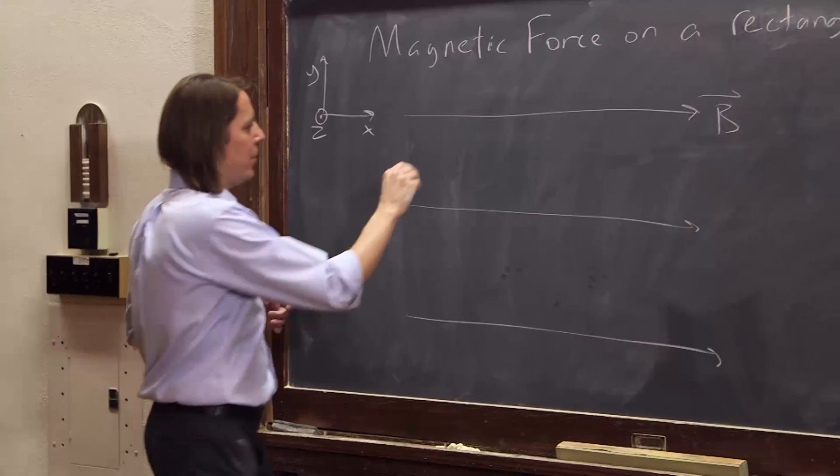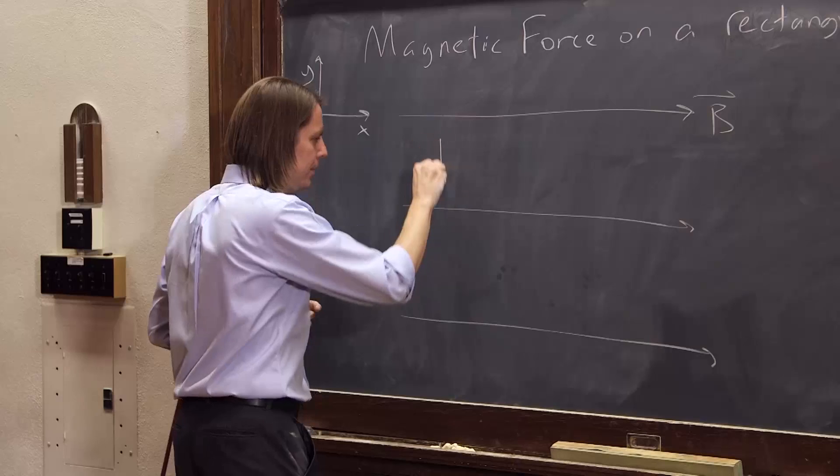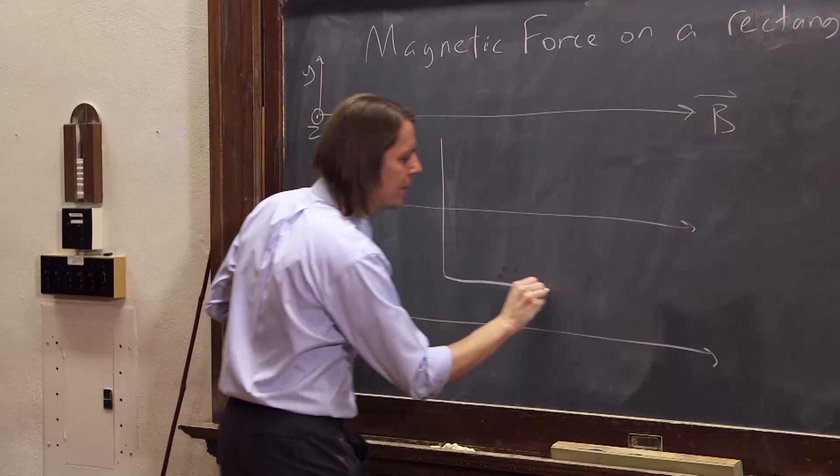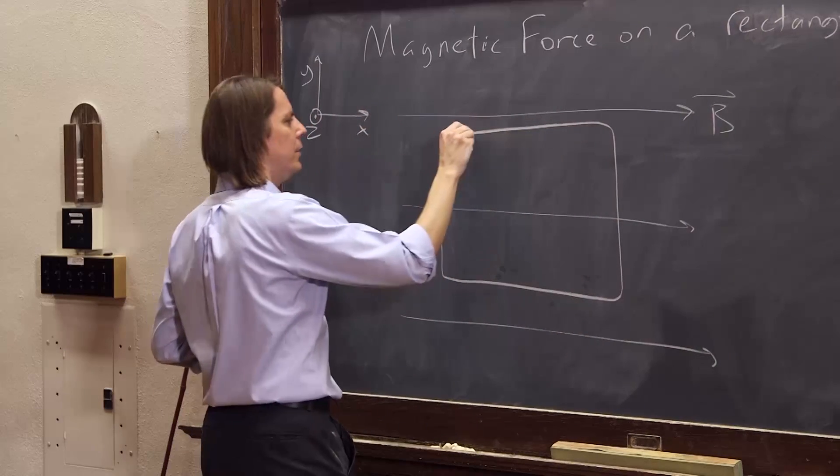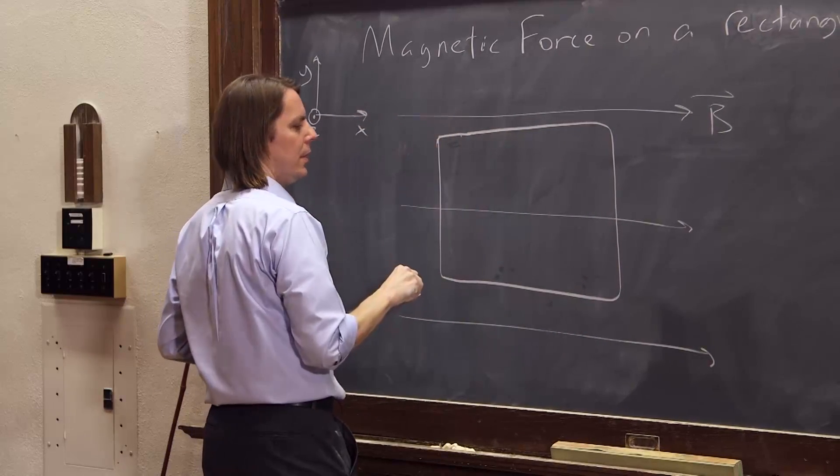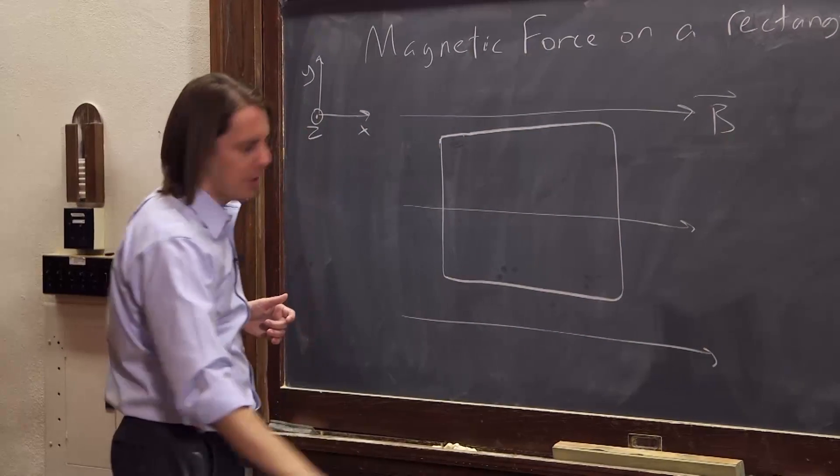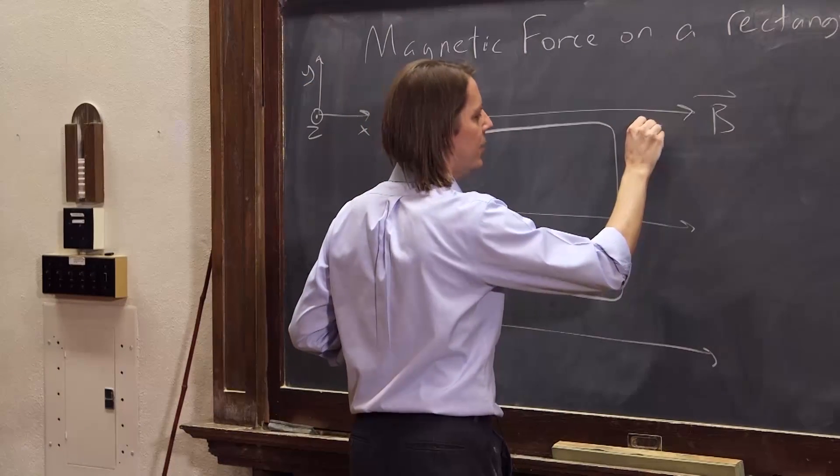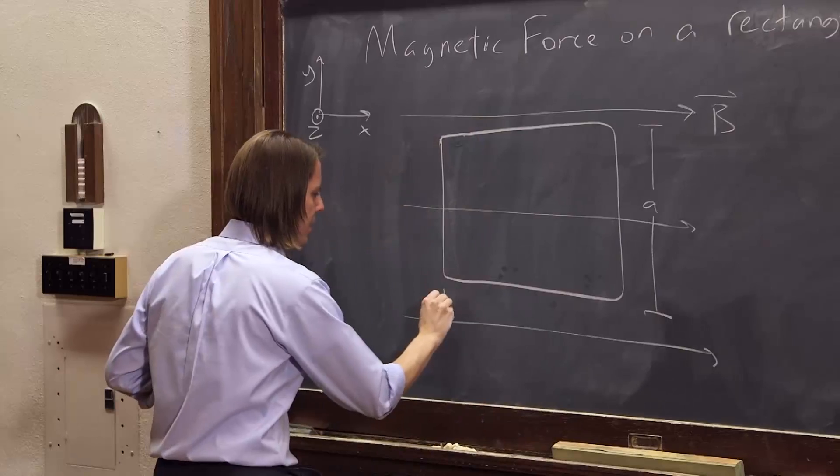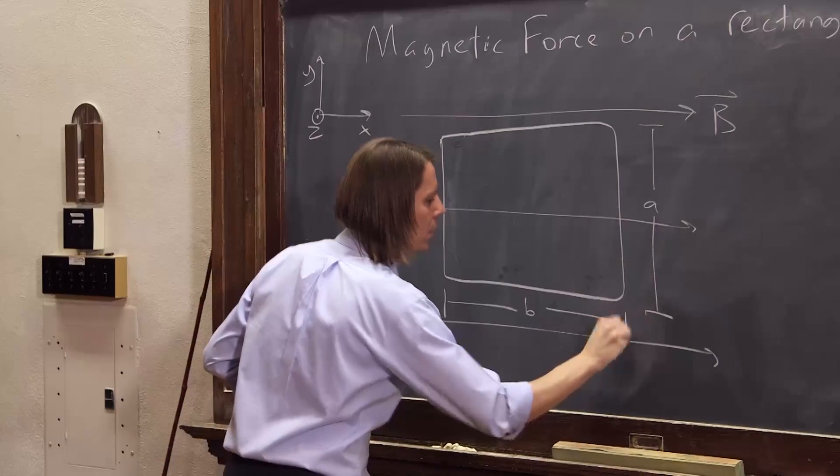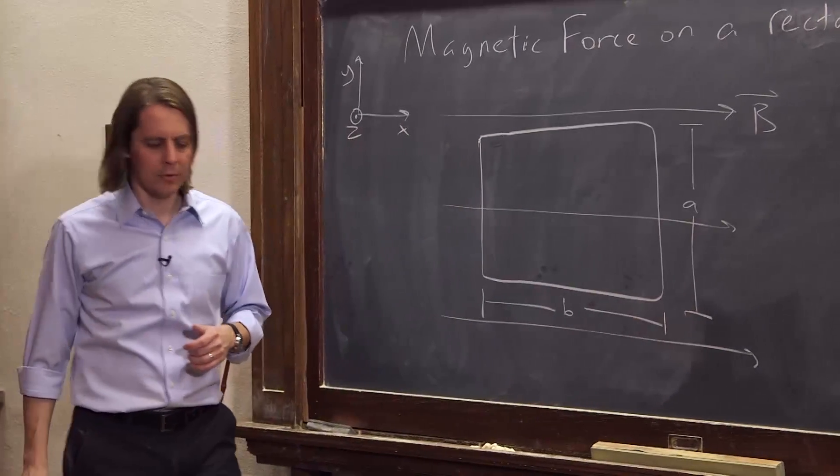And now, let's draw our current loop, like this. Kind of trying to draw it thick. Like that. And since it's a rectangle, this side will be A, have a length A. And this side will have length B. So a nice little rectangle.